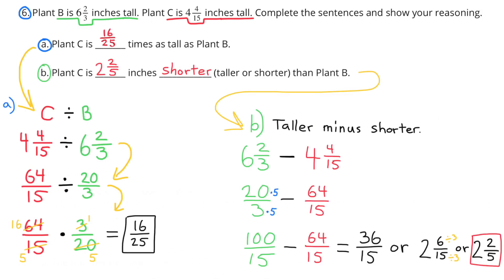Number 6. Plant B is 6 and 2 thirds inches tall. Plant C is 4 and 4 fifteenths inches tall. A. Plant C is 16 twenty-fifths times as tall as plant B. My reasoning: Plant C divided by Plant B, or 4 and 4 fifteenths divided by 6 and 2 thirds, which is 64 fifteenths divided by 20 thirds. Multiply by the reciprocal: 64 fifteenths times 3 twentieths, simplified to 16 fifths times 1 fifth, equals 16 twenty-fifths.